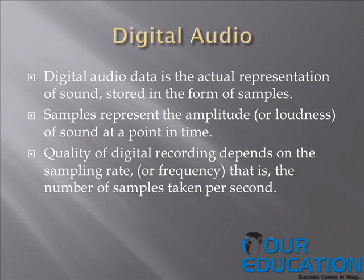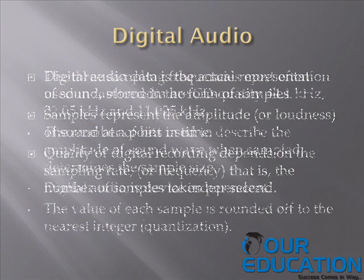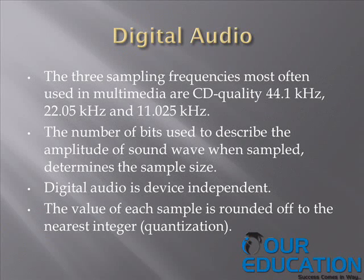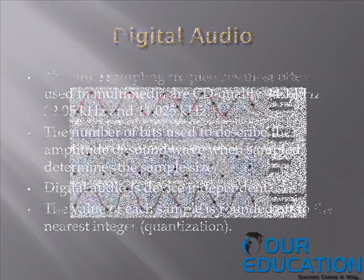Digital Audio. Digital audio data is the actual representation of sound stored in the form of samples. Samples represent the amplitude of sound at a point in time. Quality of digital recording depends on sampling rate or frequency — that is, the number of samples taken per second. The three sampling frequencies most often used in multimedia are CD quality 44.1 kHz, 22.05 kHz, and 11.025 kHz. The number of bits used to describe the amplitude of a sound wave when sampled determines the sample size.